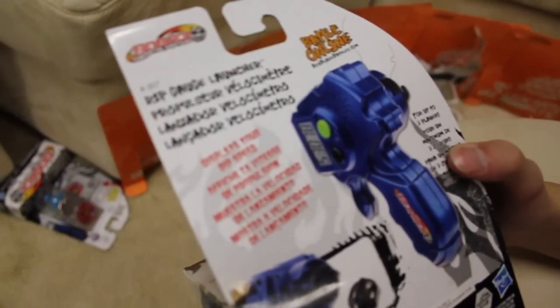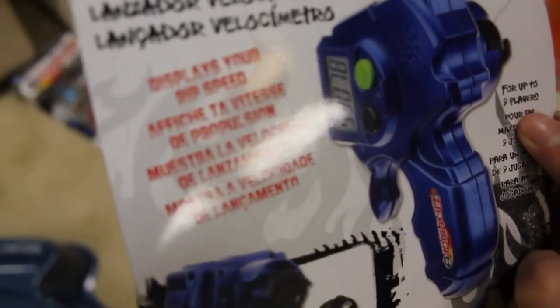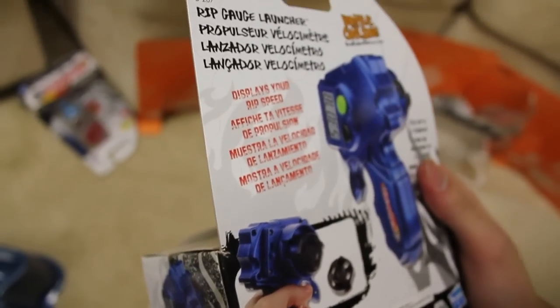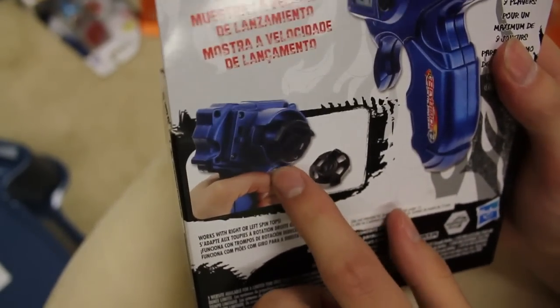Rip gauge launcher, display your rip speed. I need more revs, need more revs. For up to nine players, putting only nine players like nine different profiles. Maybe actually make it save that many, it's only three. Works with right or left tops. Oh, you can switch it just like the LR launcher.